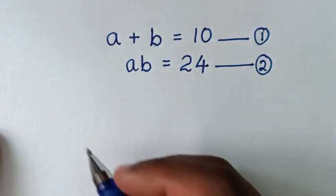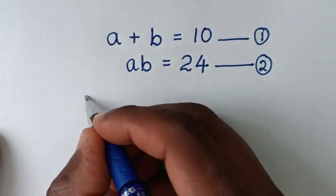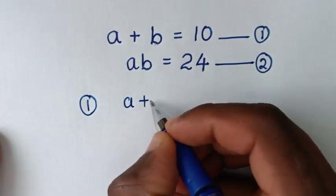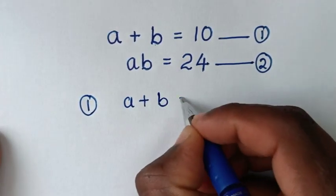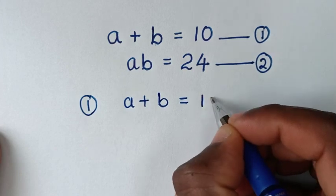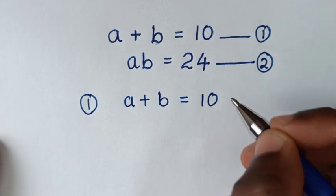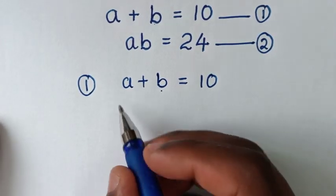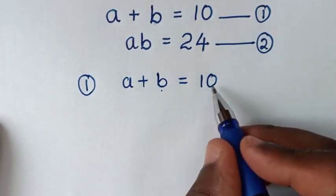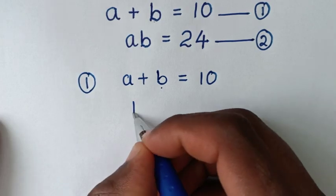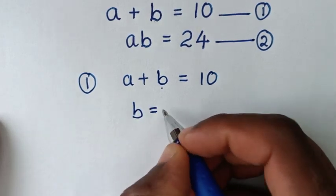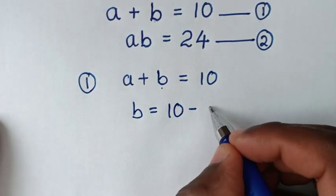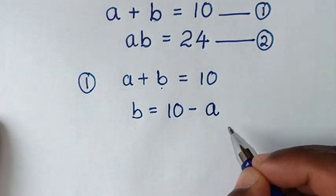Then, from equation 1, which is a plus b is equal to 10, we'll make b the subject. So we'll take a to the other side, giving us b is equal to 10 minus a.